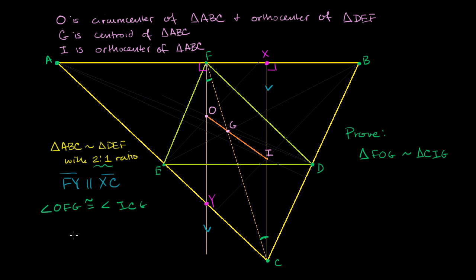Now, another property of medians is that the centroid splits each median in a two-to-one ratio — the centroid is two-thirds along the median. So we know that CG equals two times GF. We now have an angle and a ratio of two to one for one pair of sides. If we can also show that CI equals two times FO, then we have two sides in a two-to-one ratio with the included angle congruent, and we can use SAS similarity to prove the triangles similar.